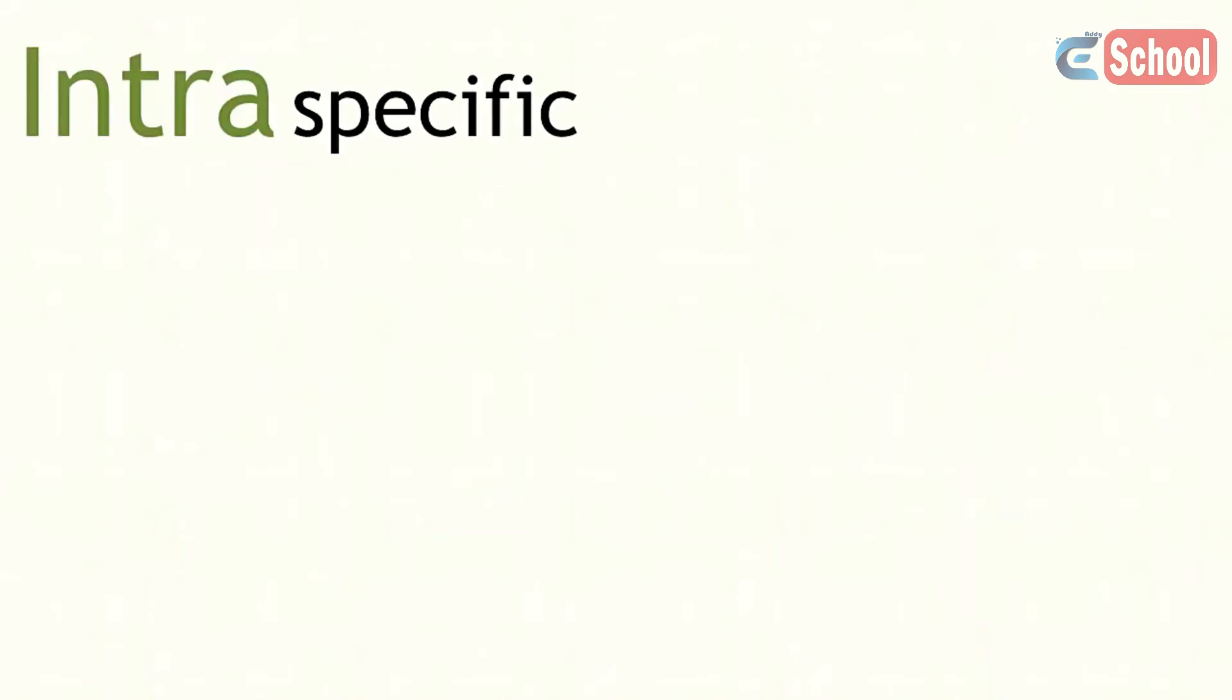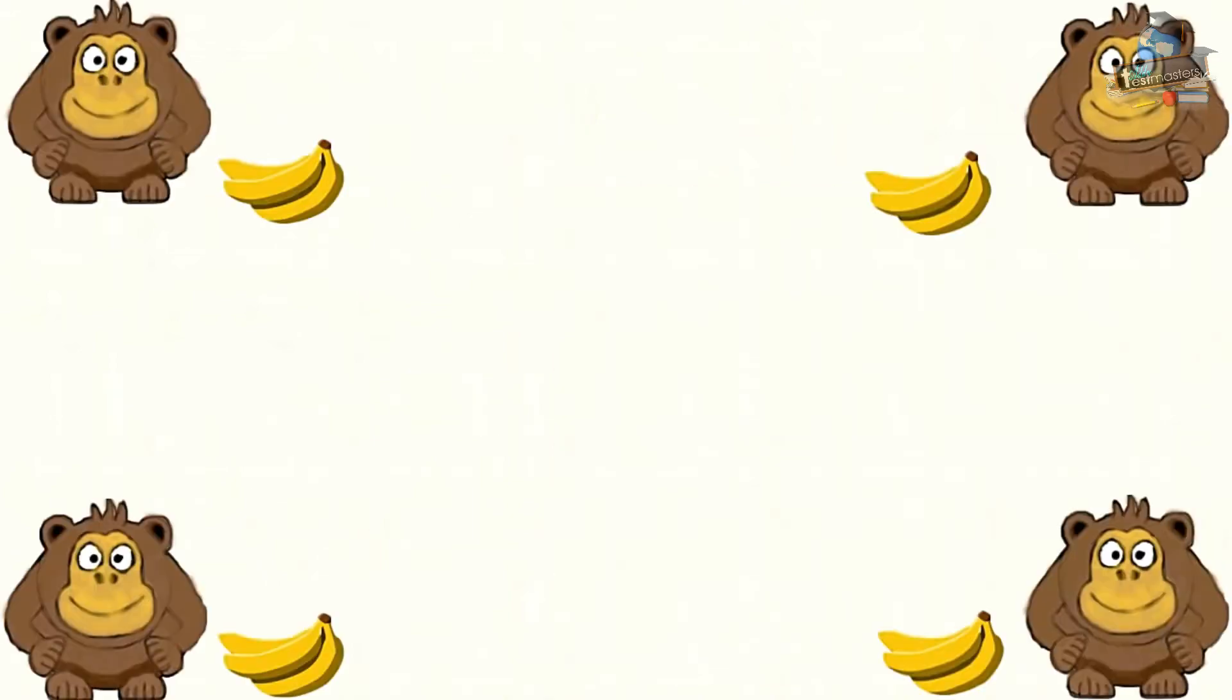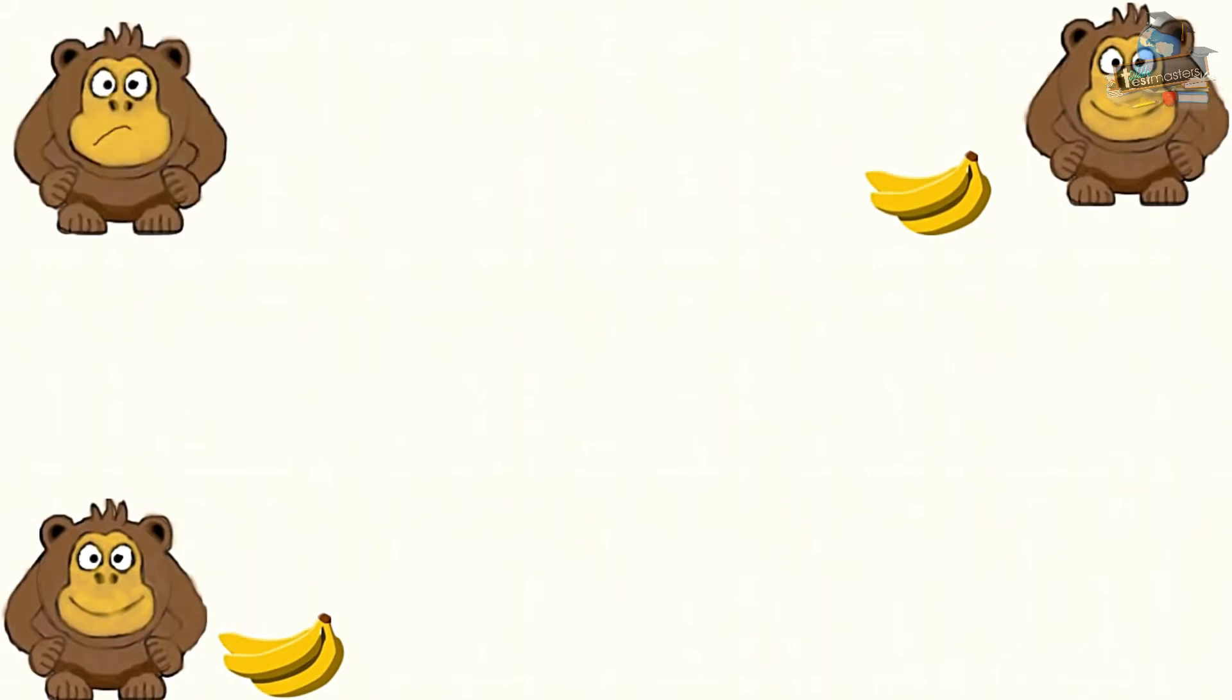Intraspecific interactions are the effects that individuals of the same species have on one another. For example, intraspecific competition is competition between members of the same species, like lots of chimps fighting over a piece of fruit. These members of the same species are competing for the same resources.